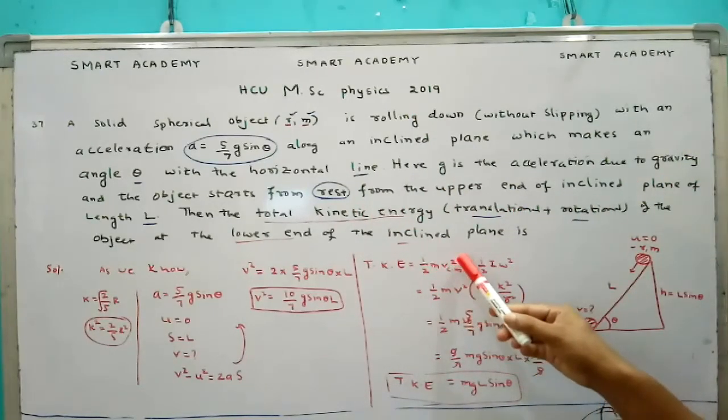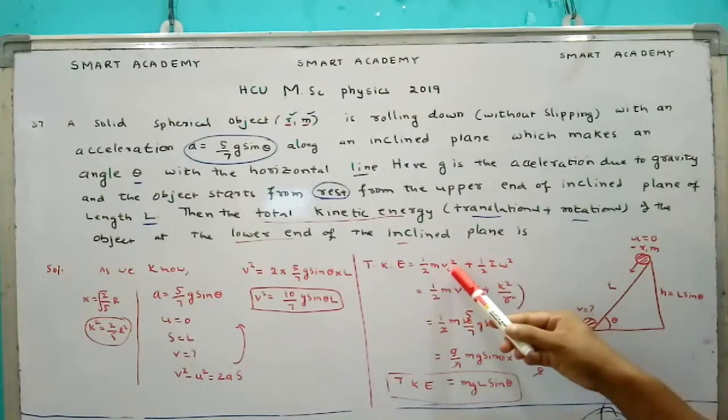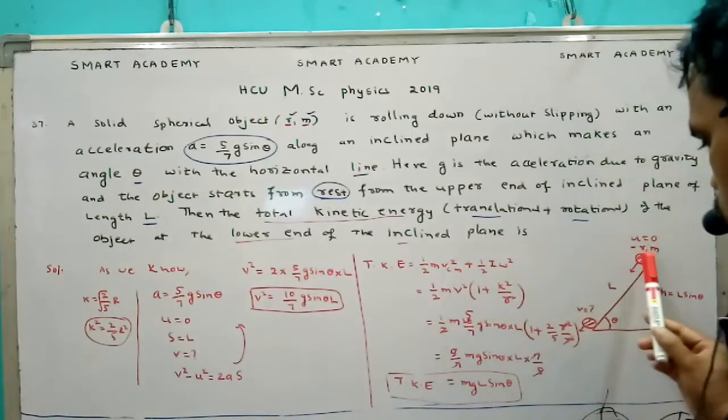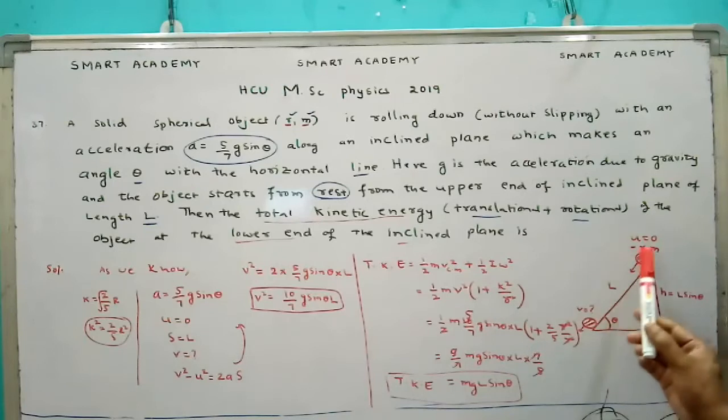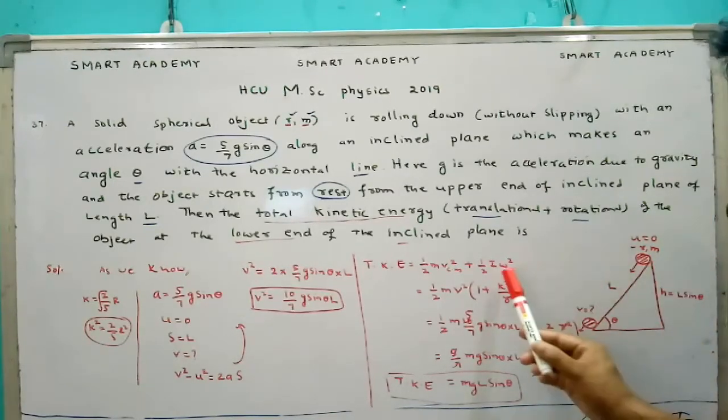That is, rolling motion, in the rolling motion the kinetic energy is equal to translation plus rotation. That means half m v_cm square plus half I omega square. V_cm is nothing but center of mass of spherical object. That is in translation motion. Total object is in rotation motion. So we substituted here and then we got m g L sine theta.